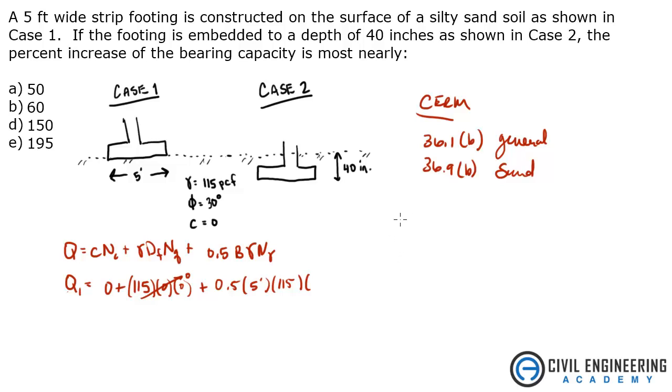For N gamma, these are bearing capacity factors, you're going to be using table 36.2. And for a friction angle 30 degrees, I'm going to look up both of these, N gamma is 19.7, and Nq is 22.5.